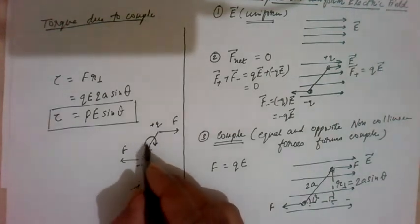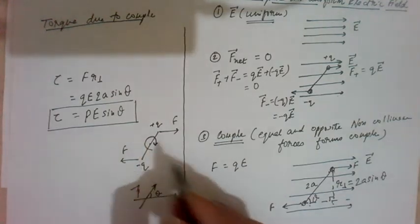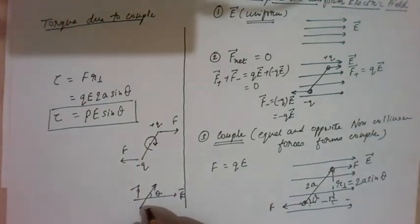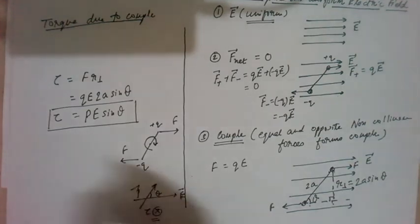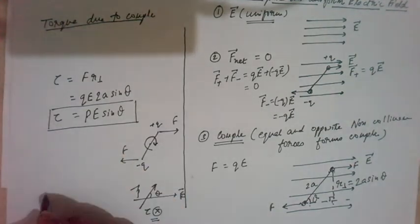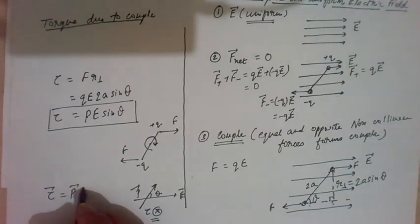So this direction is clockwise means axially inward. It is axial vector axially inward. So if you use right hand thumb rule.